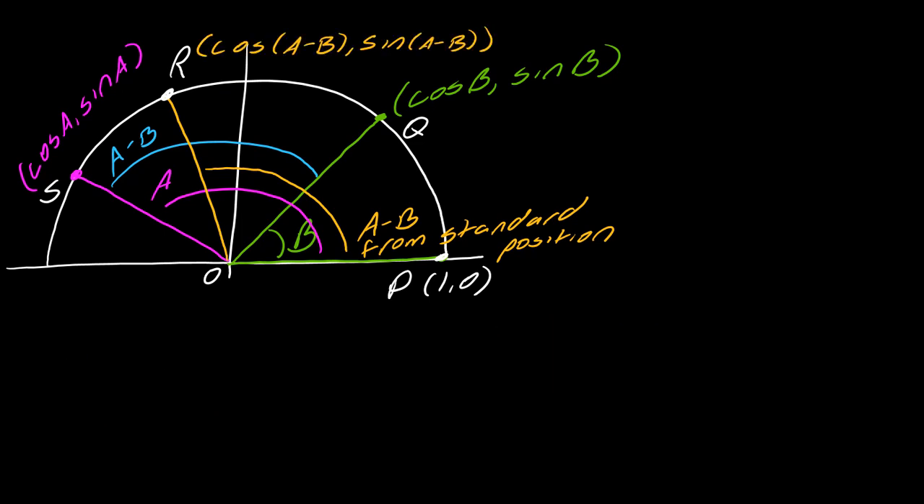Now I want to label the points that I have. Let's call this point p, this q, this r, this s, and here we're at the origin. This point r, I know that this is the angle a minus b from standard position, so I can use cosine and sine since this is the unit circle. I can label this point r as cosine of a minus b and sine of a minus b. This is going somewhere, just stay with me.